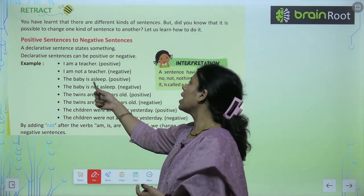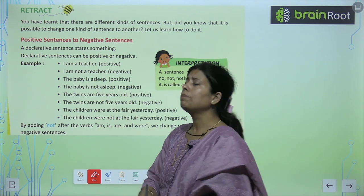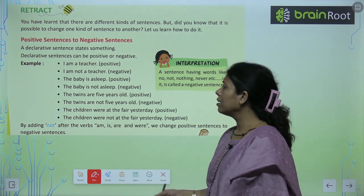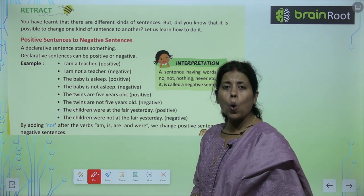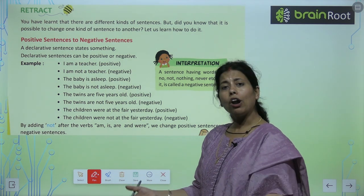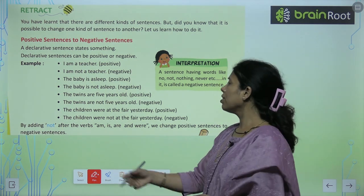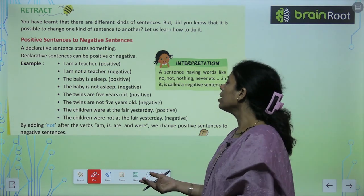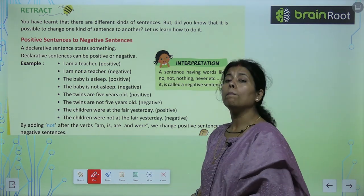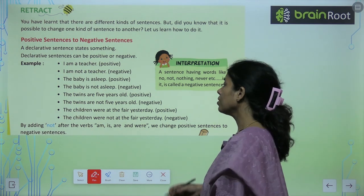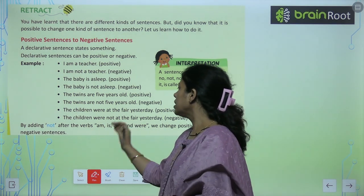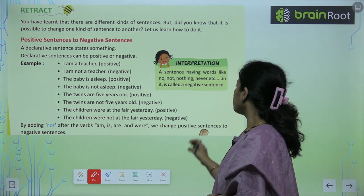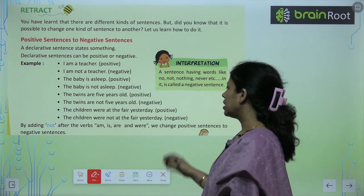Simple examples: 'The baby is asleep' (positive) → 'The baby is not asleep' (negative). 'The twins are 5 years old' → 'The twins are not 5 years old.' 'The children were at the fair yesterday' → 'The children were not at the fair yesterday.' By adding 'not' after the words am, is, are, and were, we convert a positive sentence to a negative sentence.